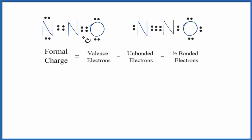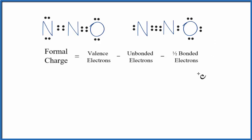Let's take a look at the formal charges for N2O. We'll look at these two Lewis structures here. There are a number of other resonance structures you could draw, but these are the more likely two, and we're going to try to figure out which one is the best. You could apply that to any other structure you draw as well. So let's start with this one here.